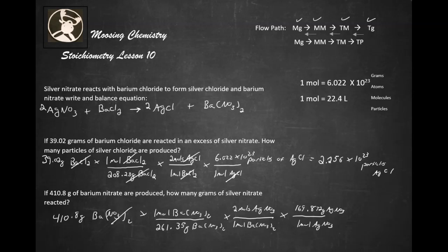So we're going to get this to cancel that, that to cancel that, that cancels that. This unit cancels that unit. And our answer is going to be 534.1 grams of silver nitrate.